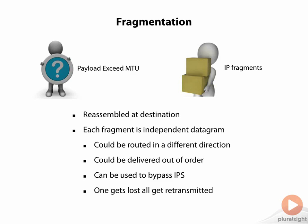Also, we can use the fragment offset inside the header and overlap fragments. If the sensor is going to put the fragments back together, it might look at that overlapping fragment and discard it, then send the remaining fragments on to the destination. In that case, the destination might reassemble the packets minus that overlapping fragment that the sensor discarded, and it might actually reassemble an attack.